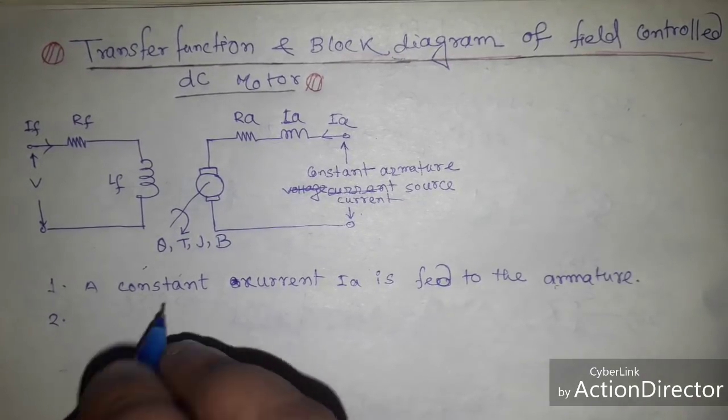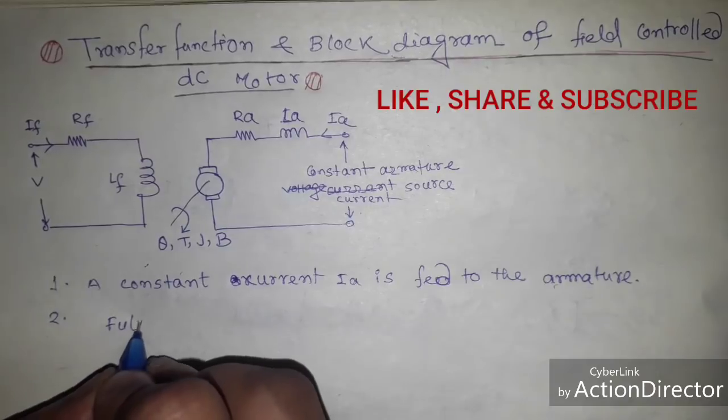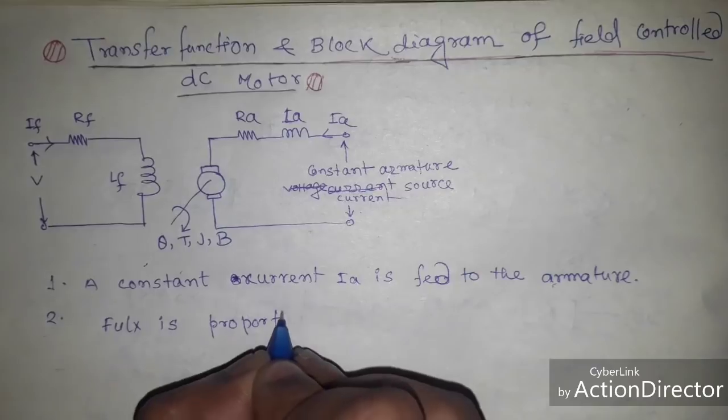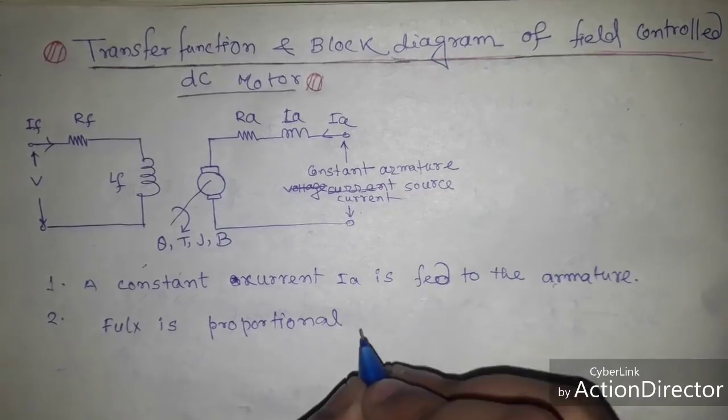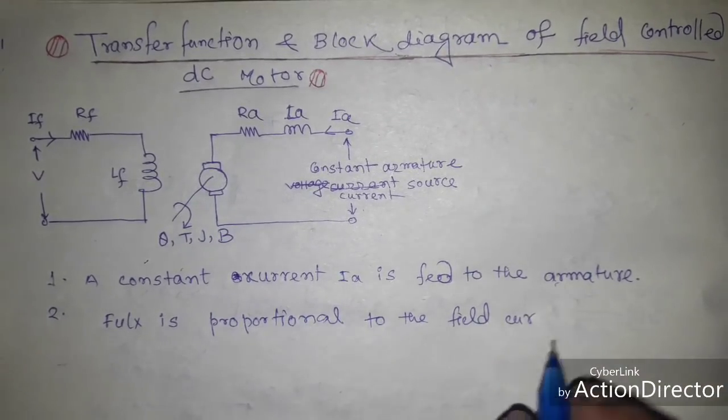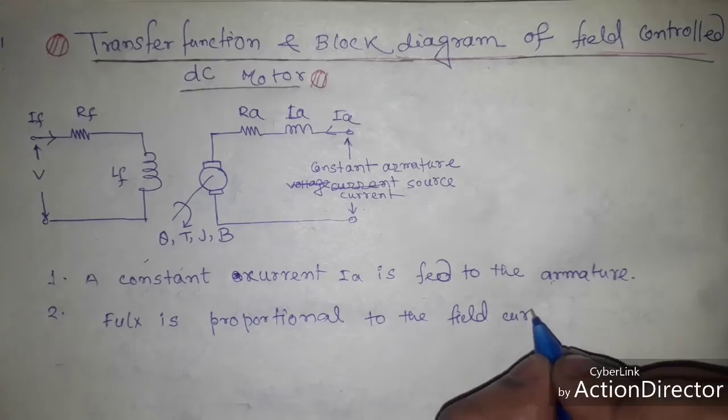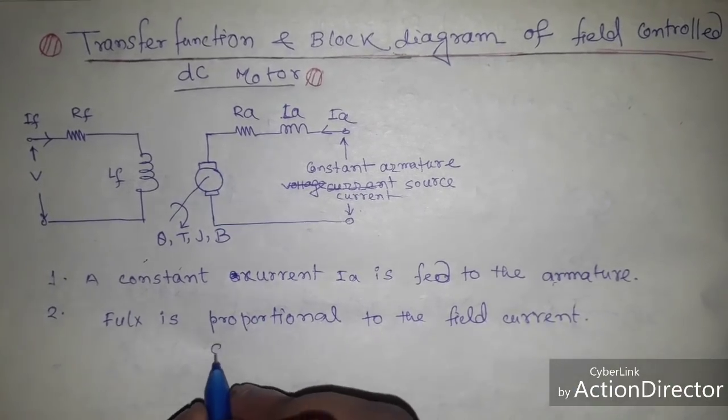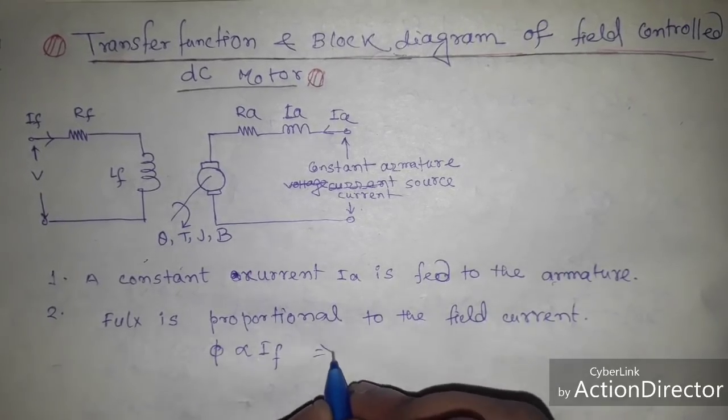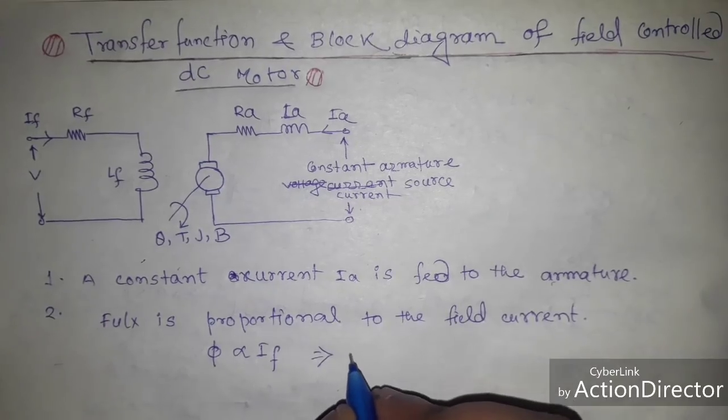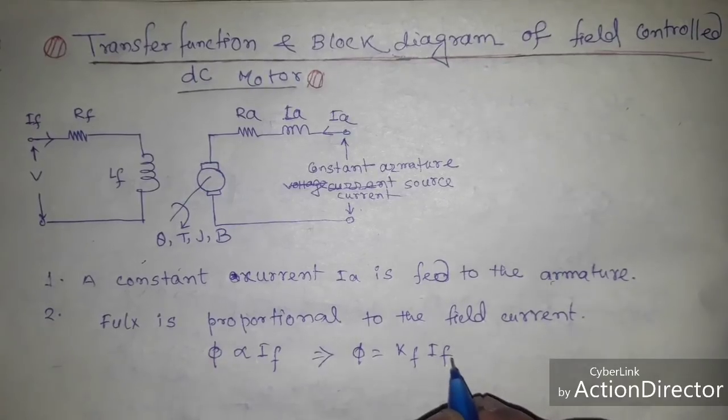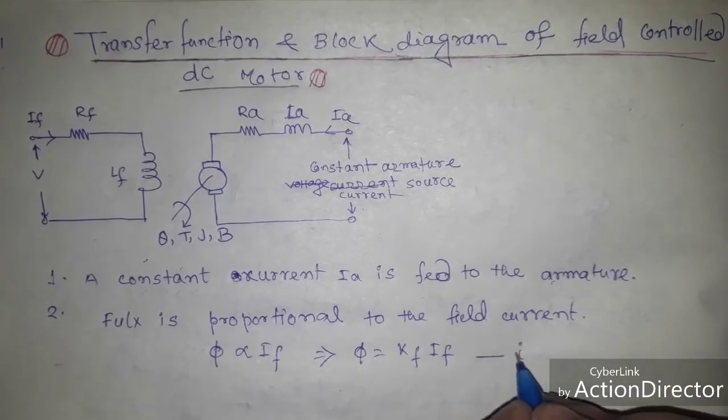Now in this case the flux is proportional to the field current as the armature portion is constant. So mathematically we can write φ proportional to If. Now we replace that proportional by using one constant, φ equal to Kf into If. So I keep that equation number one.